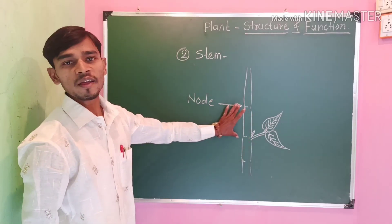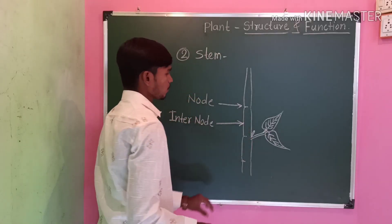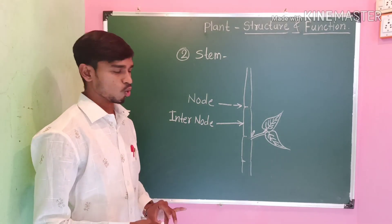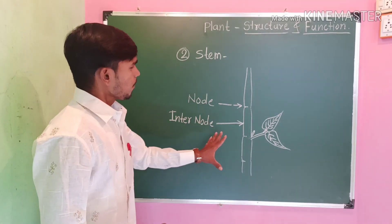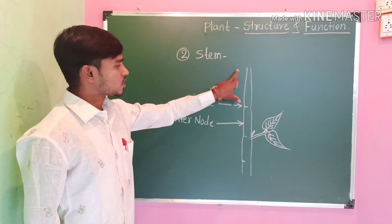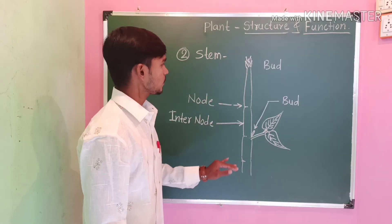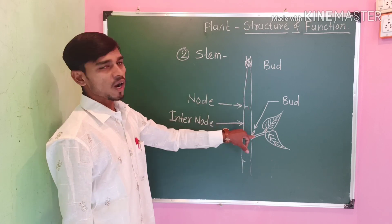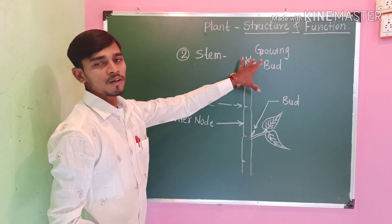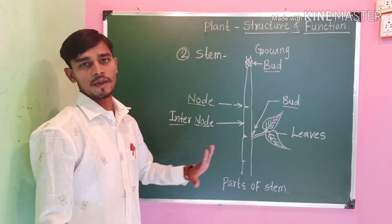The part between two nodes is called the internode. The apical end of the stem is called the bud. This is the growing bud. These are all parts of the stem.